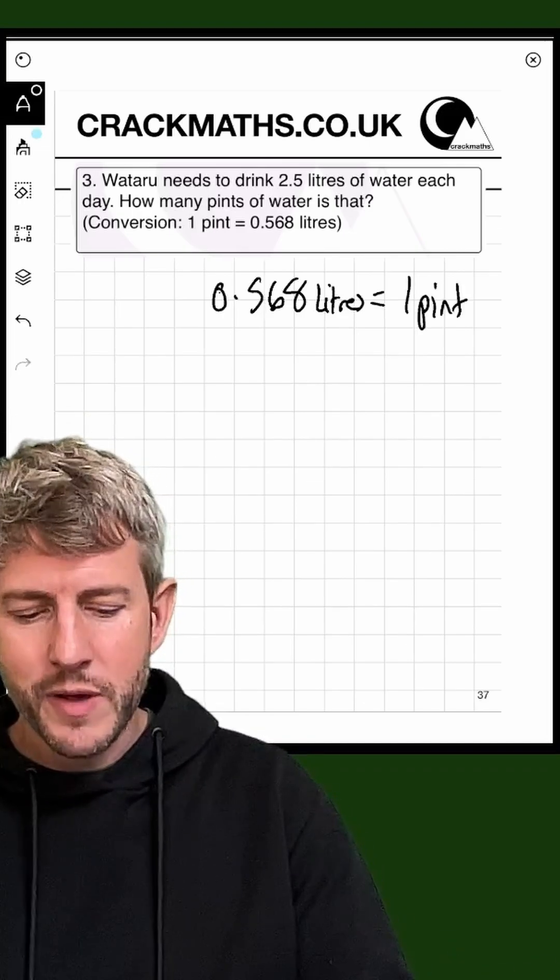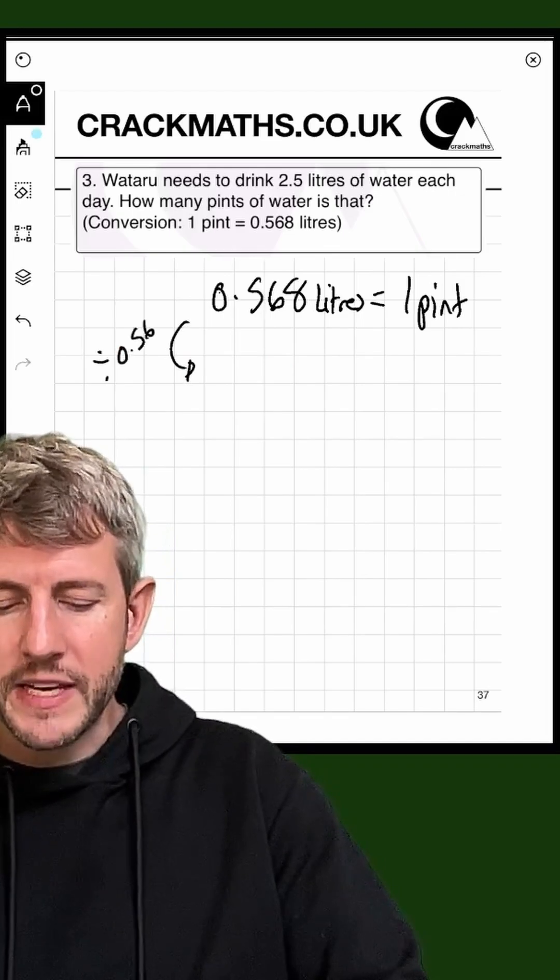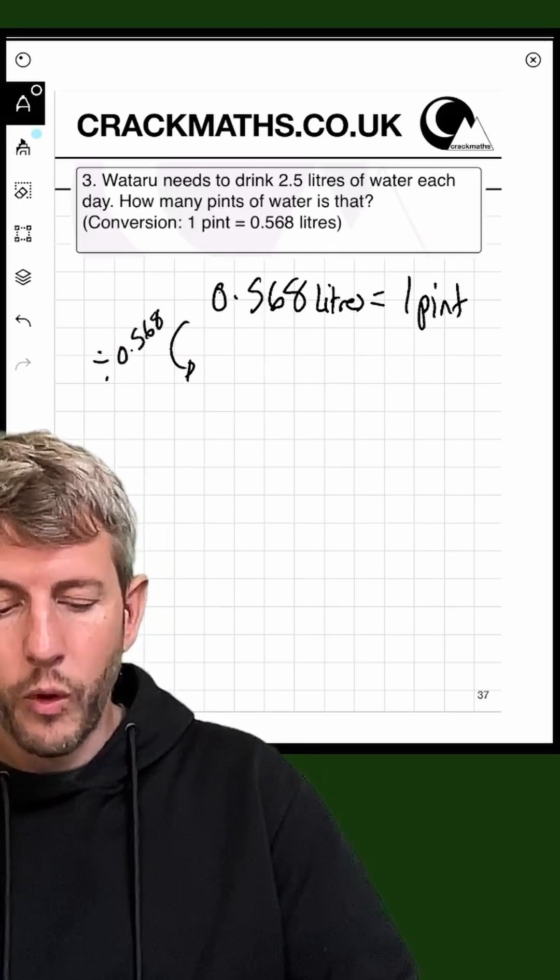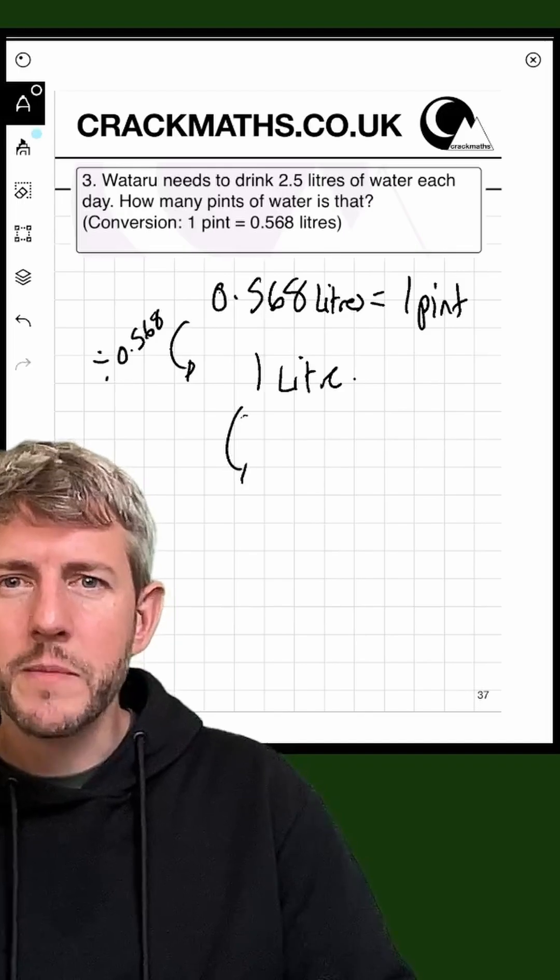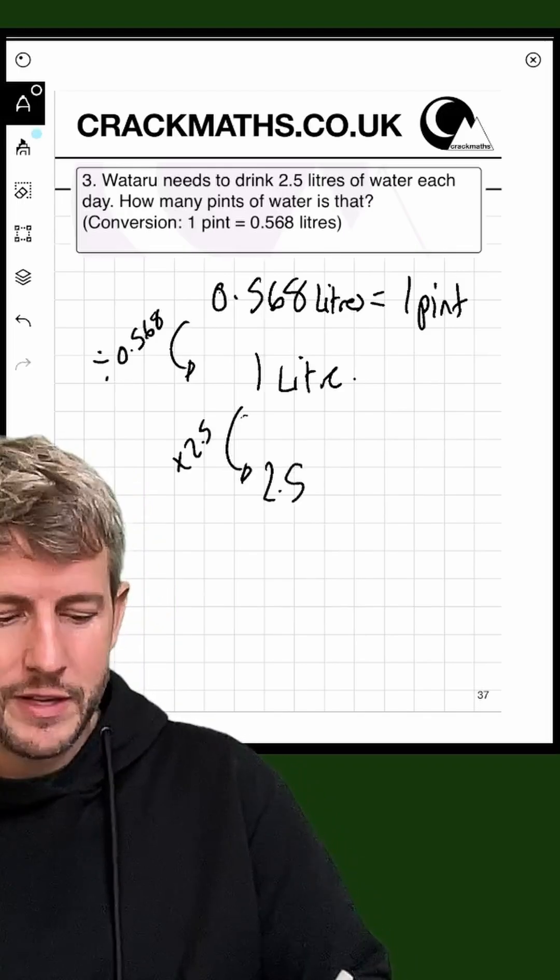Now, the journey I want to go is to divide by 0.568 to find out what one litre is. Then once I know what one litre is, I'm going to multiply that by 2.5 to end up with 2.5 litres.